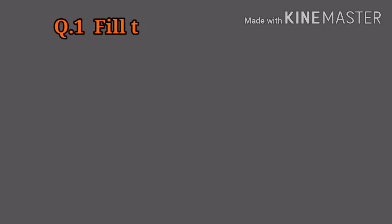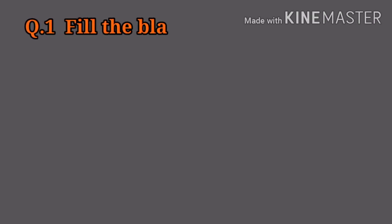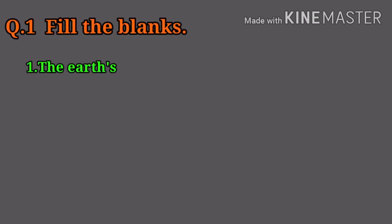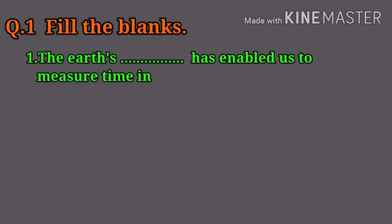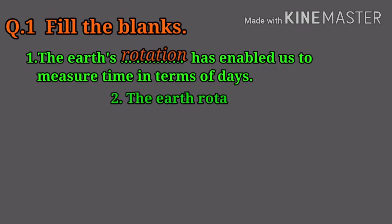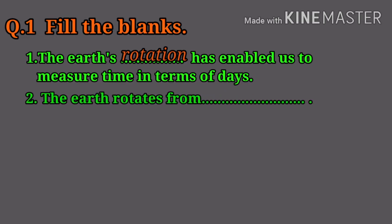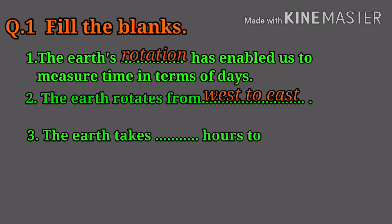Question number one: Fill in the blanks. First, the earth's dash has enabled us to measure time in terms of days — answer is rotation. Second, the earth rotates from dash — answer is west to east.